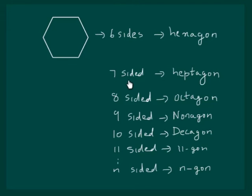Similarly, a six-sided figure is called a hexagon. A seven-sided figure will be called a heptagon. Eight-sided figure is called an octagon. Nine-sided figure will be called a nonagon. Ten-sided figure is called a decagon.